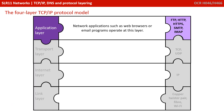Let's look at the four layers of the TCP/IP protocol model. The top layer is known as the application layer, where protocol rules deal with network applications such as web browsers or email programs. It includes protocols like FTP, web protocols like HTTP, and email protocols such as SMTP.